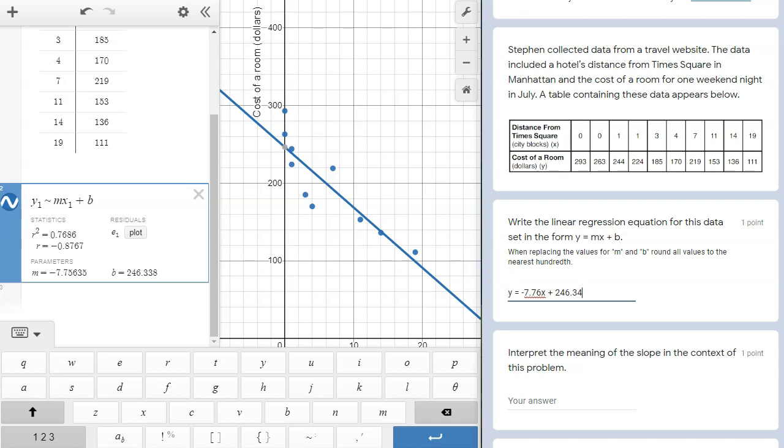Since the task states that we should round to the nearest hundredth, I did exactly that. The negative 7.756 rounds to negative 7.76. And for the y-intercept, 246.338 rounds to 246.34.